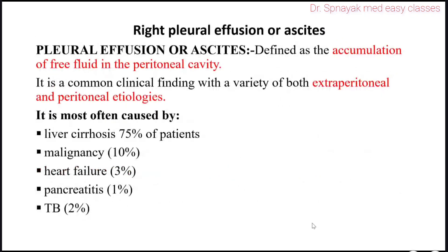Let's talk about what pleural effusion or ascites is. Pleural effusion or ascites is defined as the accumulation of free fluid in the peritoneal cavity. It is a common clinical finding with a variety of both extraperitoneal and peritoneal etiologies.